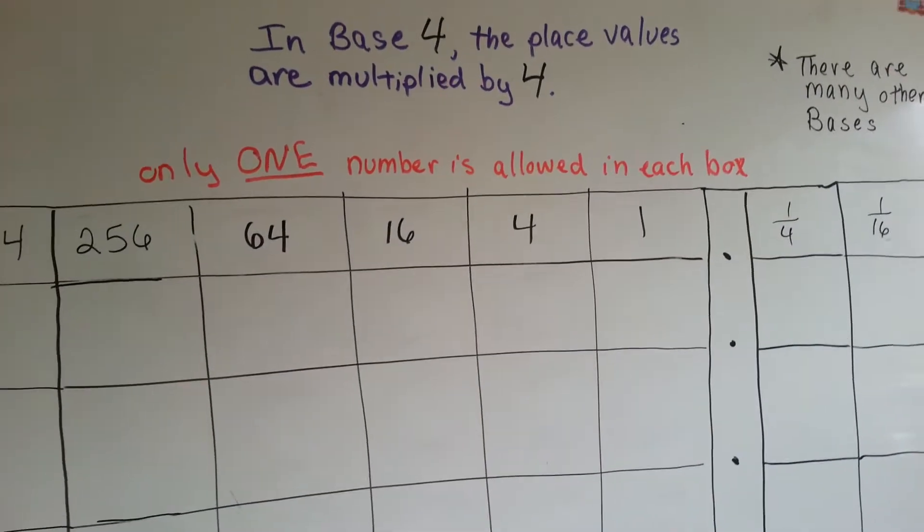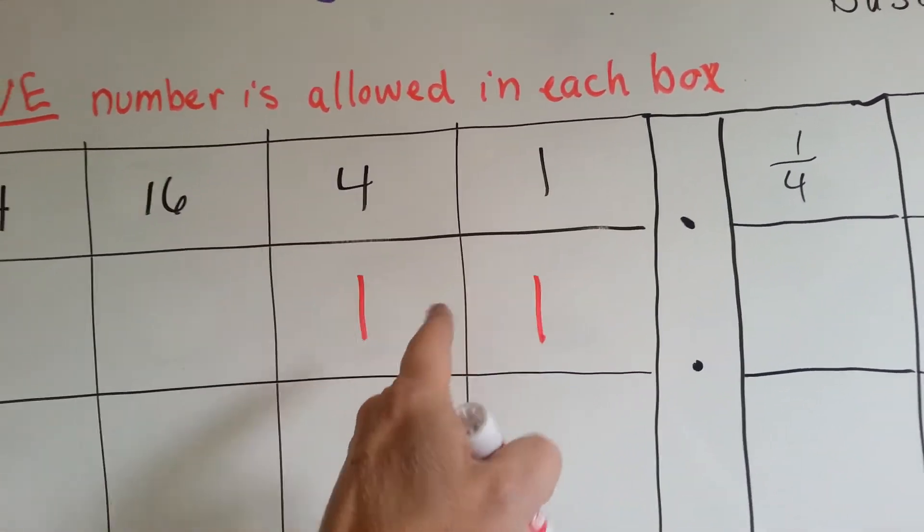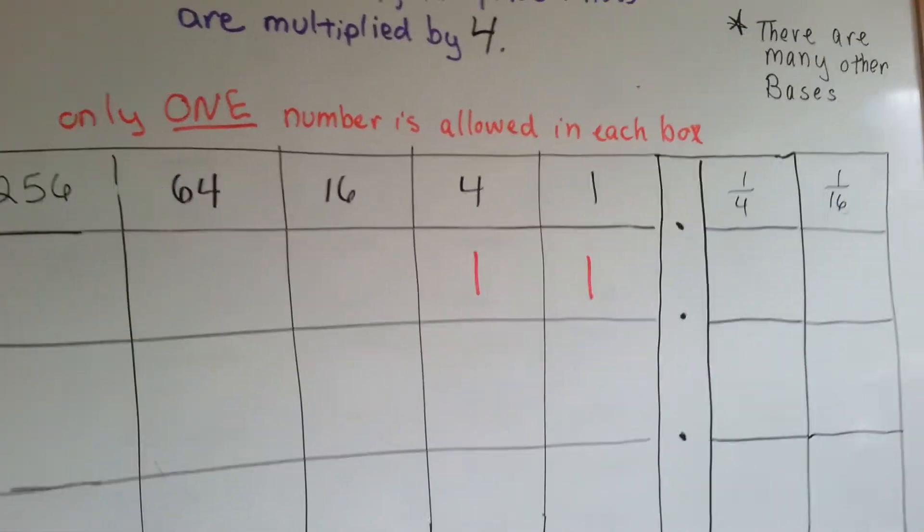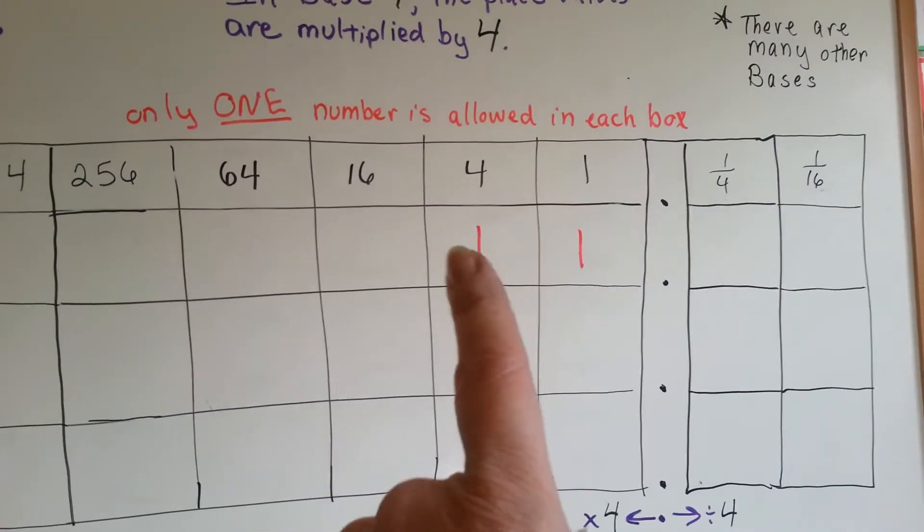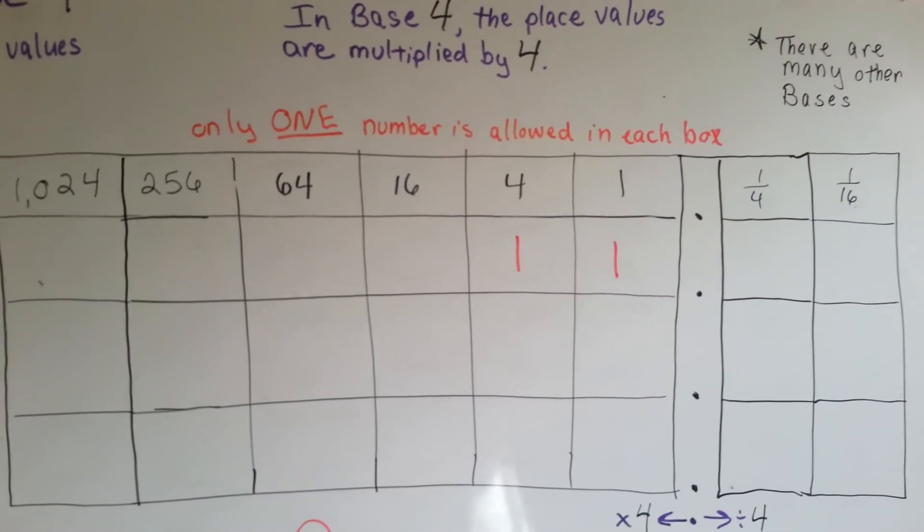So if I wanted to write the number five, I would have to put one-four and one-one, and that would make five. So in base four, an eleven would really be five. Is that confusing?